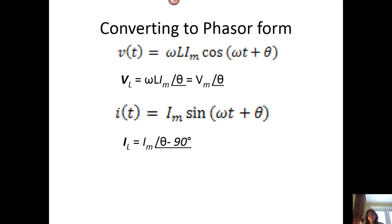If we convert that to phasor form, we know we just have to take the magnitude omega L I sub m and then the phase theta, giving us omega L I sub m at an angle of theta. For the current, we convert from sine form to our standard cosine form by subtracting 90 degrees from theta, so the current is I sub m with an angle of theta minus 90.